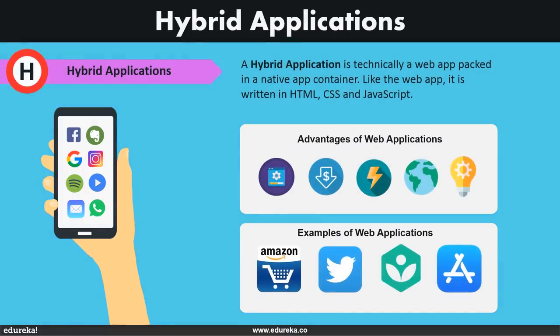Hybrid applications work across platforms and behave like native applications. A hybrid app is essentially a combination of a native application and a web app — users can install it on their device like a native app, but it is actually a web application. These applications are built with JavaScript, HTML, and CSS and run in a web view. Hybrid app development can do everything HTML5 does but also incorporates native app features by deploying a wrapper to act as a bridge to access native features. A hybrid app consists of two parts: back-end code built using HTML, CSS, and JavaScript, and a native shell that loads the code using a web view.